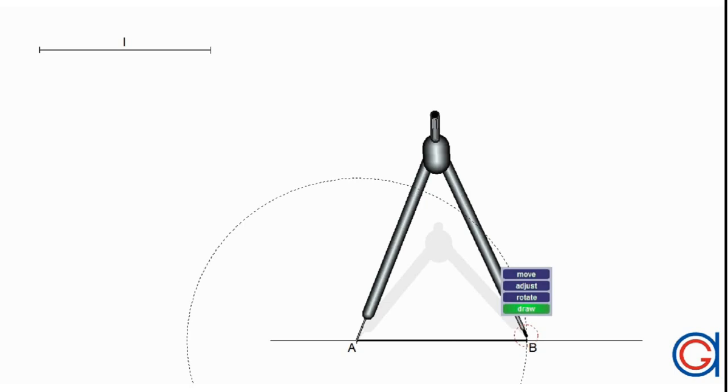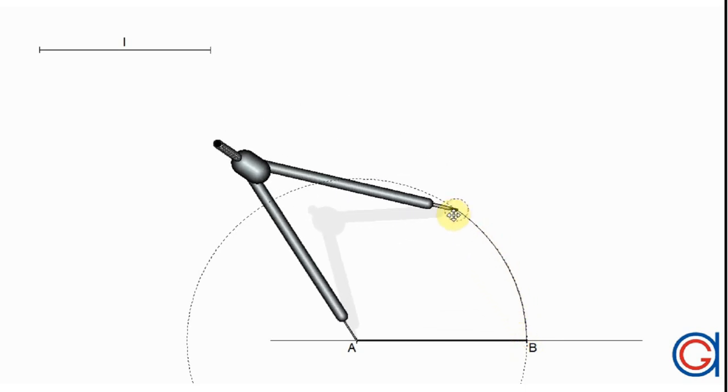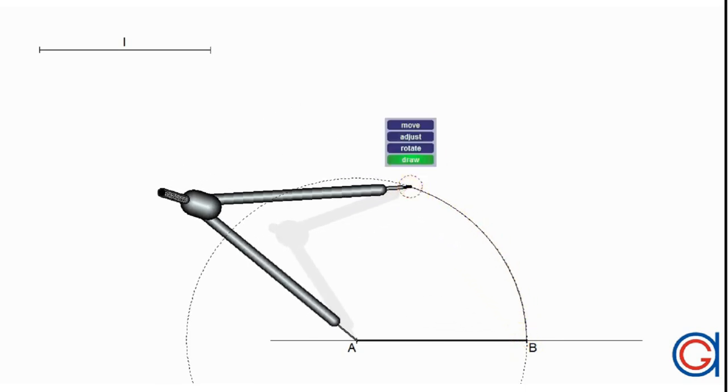The next step, with our compass set on point A and a radius AB, we draw an arc to the left, as can be seen here in the video.